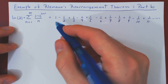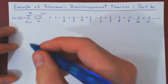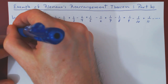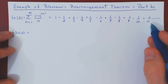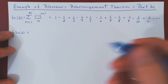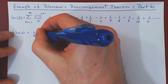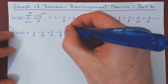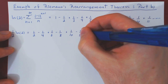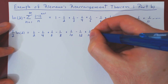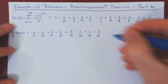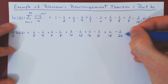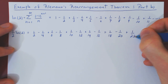Although the idea of the rearrangement of the series is simple, it is a bit devious. We'll look now at one-half ln(2). If we multiply this series by one-half, we multiply each term by one-half, which gives the new series: one-half, negative one-quarter, plus one-sixth, negative one-eighth, plus one-tenth, negative one-twelfth, plus one-fourteenth, negative one-sixteenth, plus one-eighteenth, minus one-twentieth, plus one-twenty-second, and so forth.